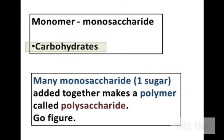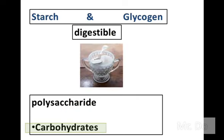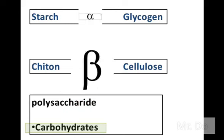The word saccharide means sugar. Now, there are four carbohydrate polysaccharides, and they are starch and glycogen — these two are digestible sugars. There are two more: chitin and cellulose — these two are not digestible. The difference between them is that the digestible ones come in alpha linkage, while the ones you cannot digest come in beta linkage.